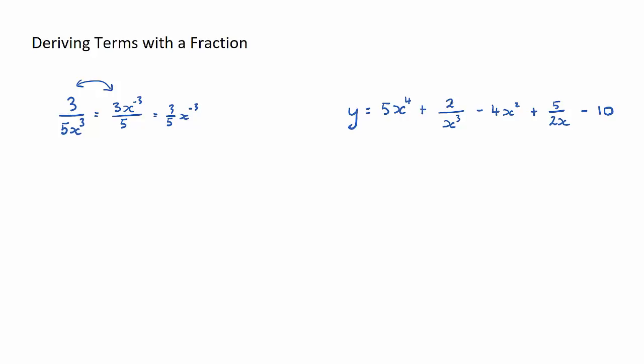So let's go ahead and do this equation on the right. First things first, before I differentiate I'm going to rewrite all of my fractions with the variable on the top. So this stays the same, this first term 5x to the power of 4. This next term would be plus 2x to the power of minus 3.